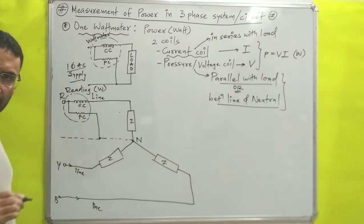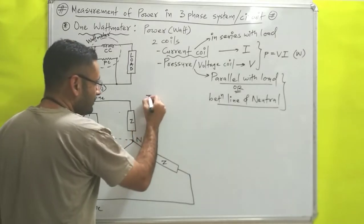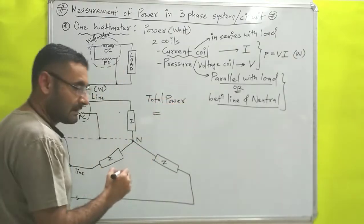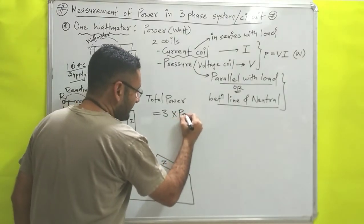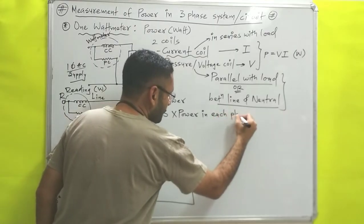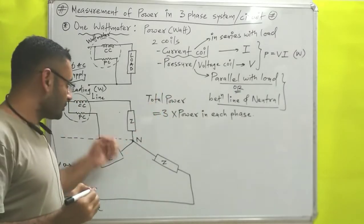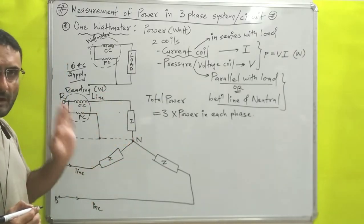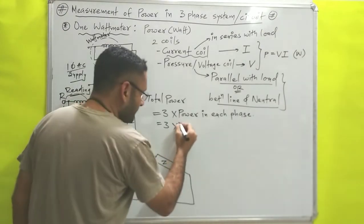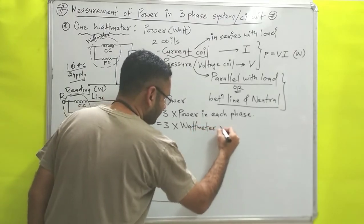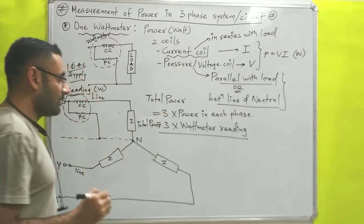Let W be the wattmeter reading — that is the power of a single phase. Since there are three phases R, Y, and B, the total power equals 3 times the power in each phase. Why multiply by 3? Because the circuit is balanced, so each and every phase has the same power. Therefore: Total Power = 3 × W (wattmeter reading). That is the equation to find the total power with the help of one wattmeter.